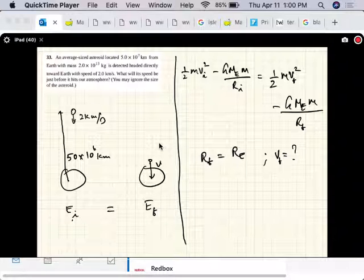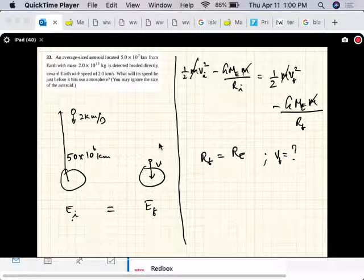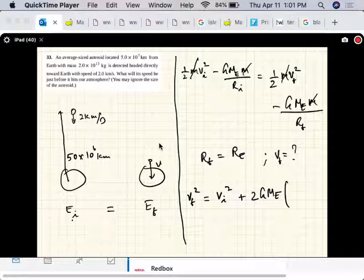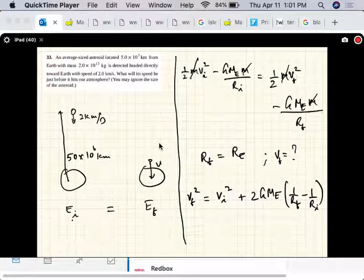One of the first things you want to notice is that this m cancels. What does that tell you? The mass of the asteroid doesn't matter. Every asteroid starting at that point at that speed would hit with the same speed. Now let me arrange it a little better. I'll kill the half, so v final squared is v initial squared plus 2GMₑ times (1/Rf - 1/Rᵢ). You can do this algebra at home if it's not clear to you.